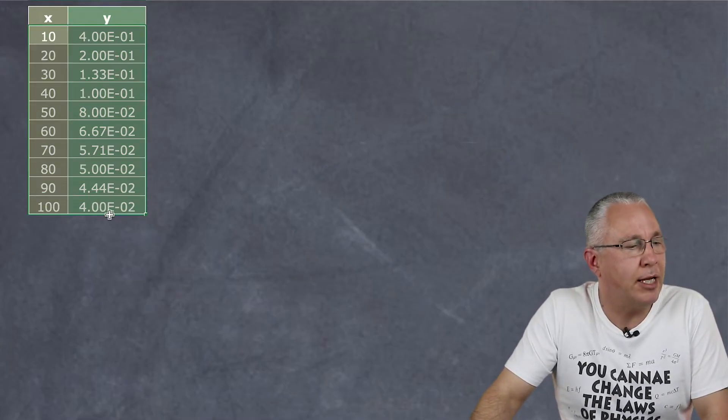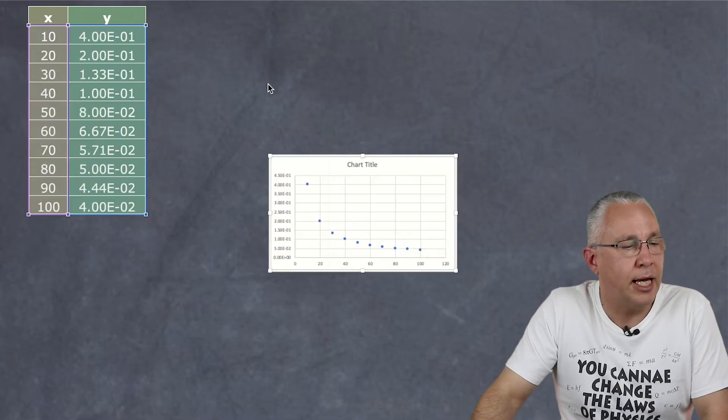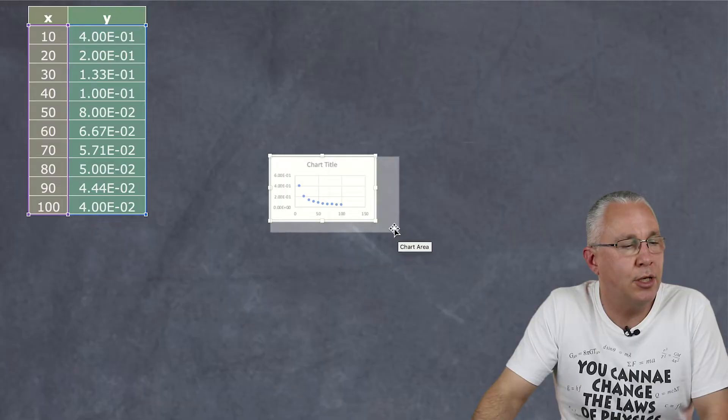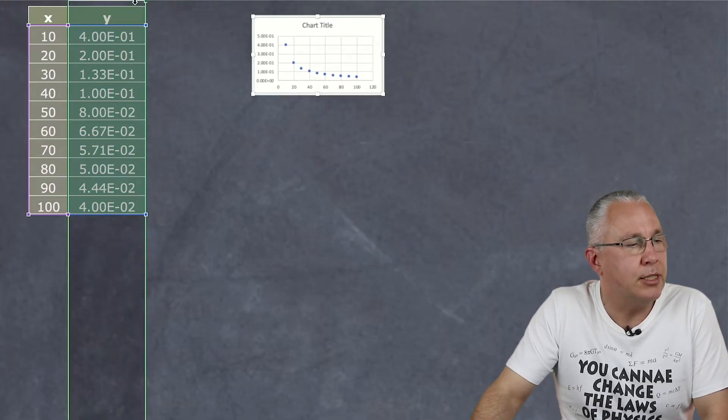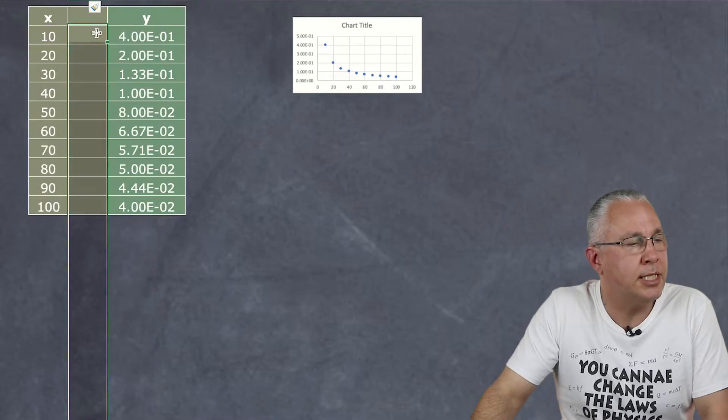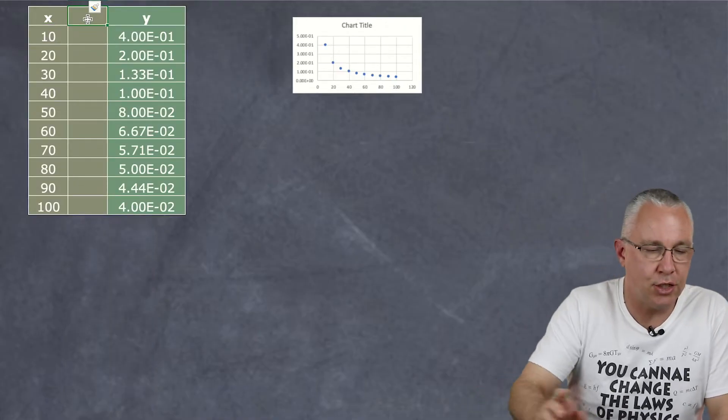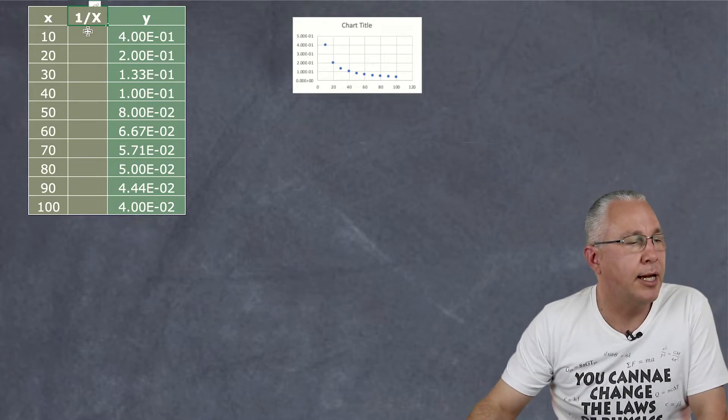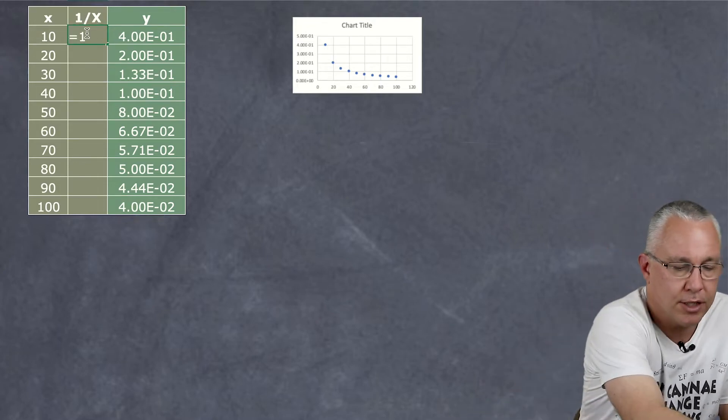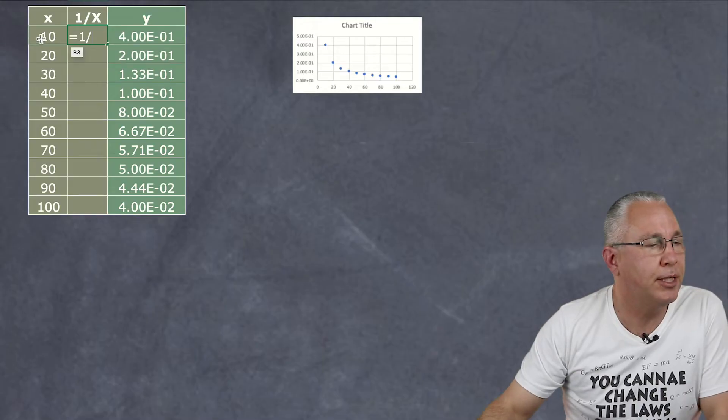Again we start off by graphing our data. You can see I definitely have an inverse relationship but I don't want this. I want a straight line. So I'm going to insert a column and in this case I think the relationship is going to be one over X. And now again I use that concept of the formula I put in here. You can do this by hand though you just got to calculate each value. And now I'm going to graph the relationship.